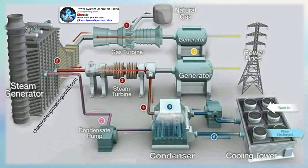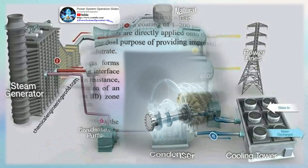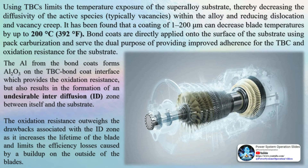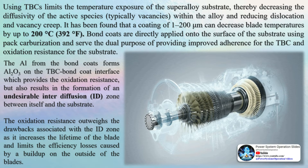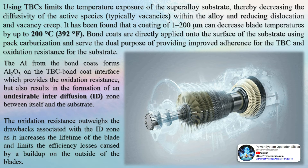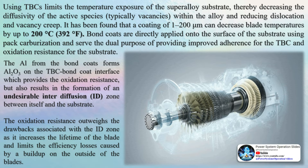Gas turbines are also used in many liquid fuel rockets, where they power a turbopump to permit the use of lightweight, low-pressure tanks, reducing the empty weight of the rocket. A turboprop engine is a turbine engine that drives an aircraft propeller using a reduction gear. Turboprop engines are used on small aircraft such as the Cessna 208 Caravan and Embraer MB 312 Tucano military trainer, medium-sized commuter aircraft such as the Bombardier Dash 8, and large aircraft such as the Airbus A400M transport and the Tupolev Tu-95 strategic bomber.